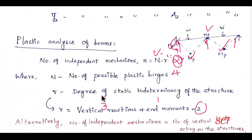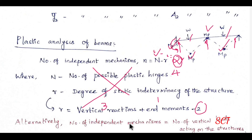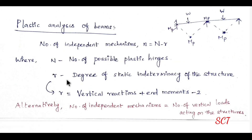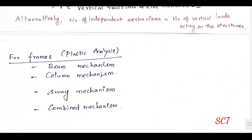Alternatively, the number of independent mechanisms equals the number of vertical loads acting on the structure. So however many loads act, that many mechanisms exist. This gives us a simple way to calculate the number of mechanisms.